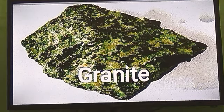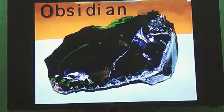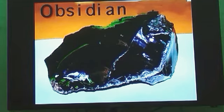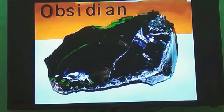The third type is Obsidian. Do you see how shiny it is? Obsidian is formed by lava that moves quickly above the ground. It is shiny and glassy, and it is usually black or dark in color. The edges of obsidian are very sharp. So this rock is used to make cutting tools.